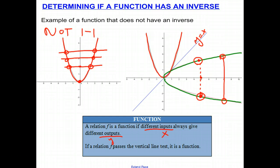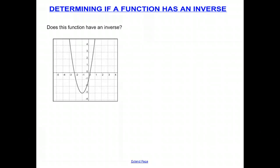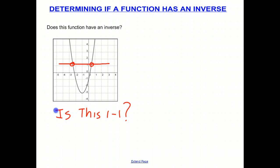Going back to what we were discussing: since the function on the left is not one-to-one, when you reflect it across the line y equals x you get a reflection, but if it fails the vertical line test it means it's not a function. So if a function is not one-to-one, it does not have an inverse function. Now let's do a problem: does this function have an inverse? The easiest way is to check if it's one-to-one — does it pass the horizontal line test? Clearly it does not. For every one value of y, there are two values of x. Therefore the answer is no — it's not one-to-one and does not have an inverse.